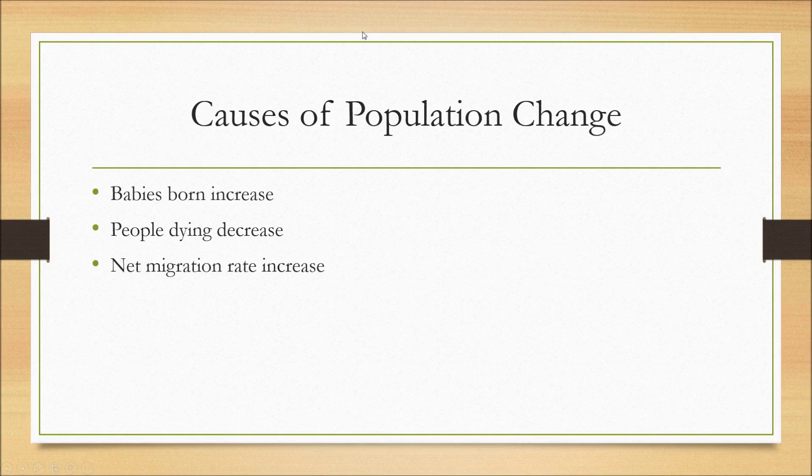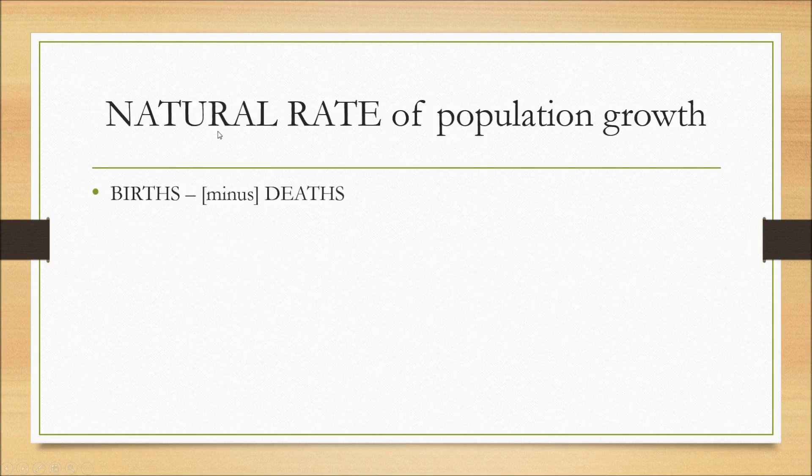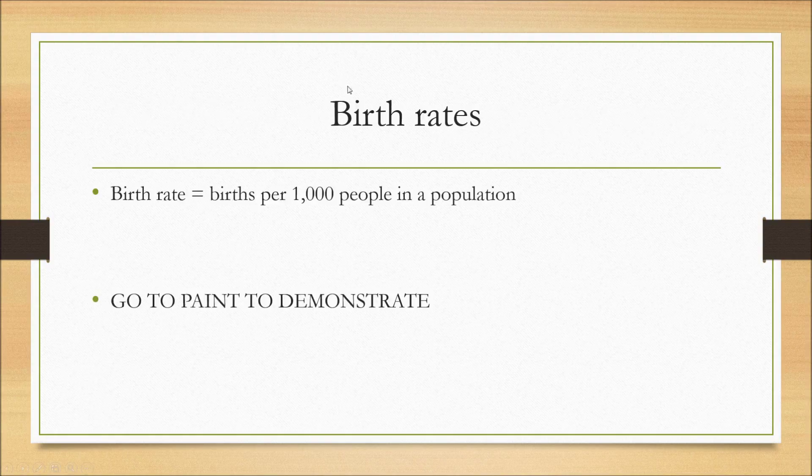There are different causes of population change and there are three main factors. First of all is the birth rate, second of all is the death rate, and the third of all is the net migration rate. Before I explain the first one, there is the natural rate of population growth and this is the birth minus the death purely. That it doesn't include net migration at all.